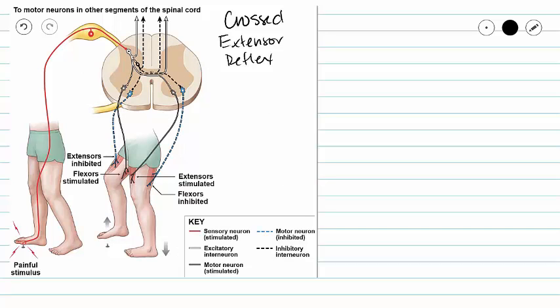Our crossed extensor reflex is involved in shifting our body weight to the contralateral side from the painful stimulus in order to support our body during the reflex and prevent you from falling over.